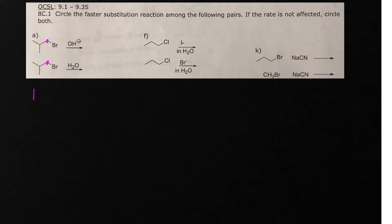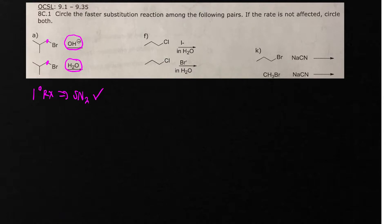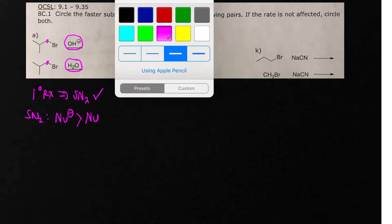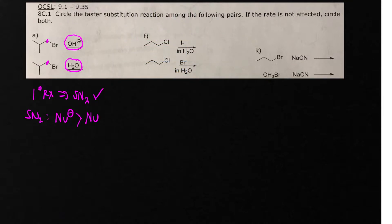If you have a primary alkyl halide, this mandates that the reaction occurs by SN2 — there's no wiggle room there. Now what you want to do is look at the nucleophile. If we are talking about an SN2 reaction, we know that nucleophiles that have a negative charge are more nucleophilic than neutral nucleophiles. So therefore we would say that this first reaction is going to be a faster reaction.